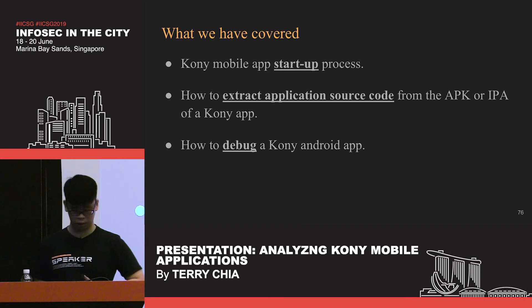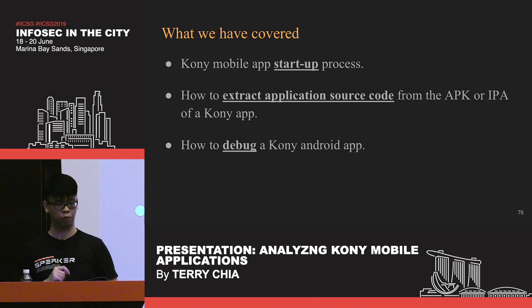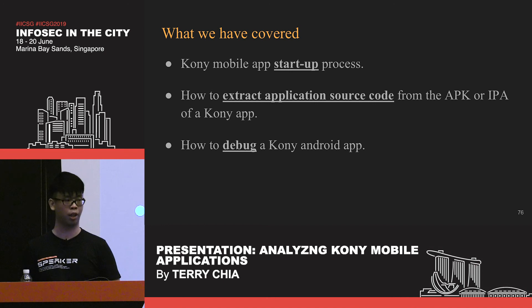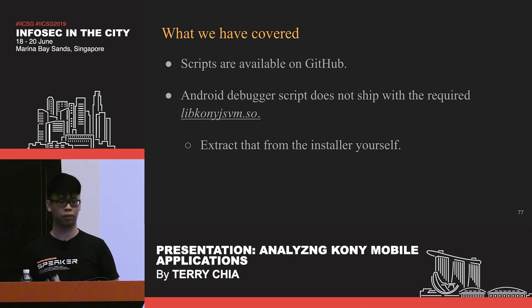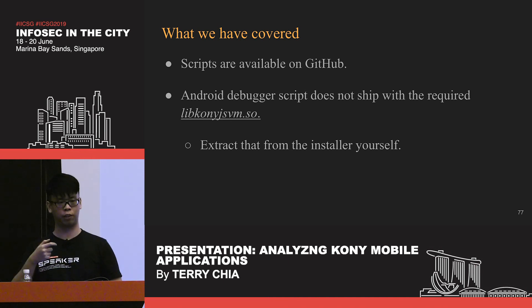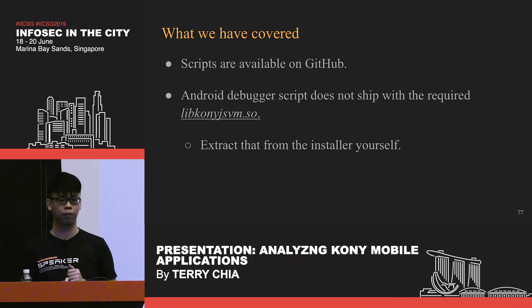In conclusion, we've covered the Kony mobile application startup process, shown how to extract application source code from APK and IPA files, and shown how to debug a Kony Android application. All the scripts shown today are available on GitHub. The Android debugger script does not ship with the required version of libKonyJSVM shared library — you will need to extract that from the installer yourself, which you can download from Kony's website.